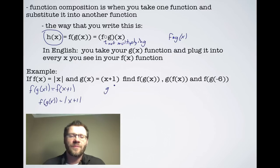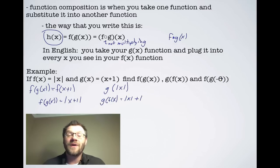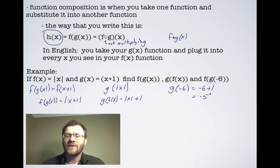Now g(f(x)) is the opposite — we find g(|x|). Since g(x) = x + 1, we replace x with |x|, giving g(f(x)) = |x| + 1. To evaluate f(g(-6)), we first find g(-6) = -6 + 1 = -5, then find f(-5) = |-5| = 5.